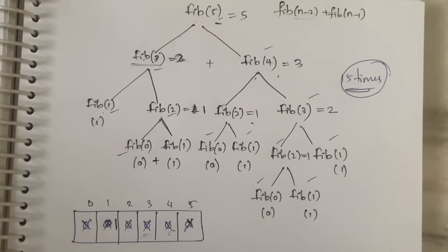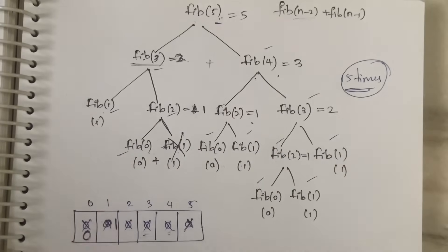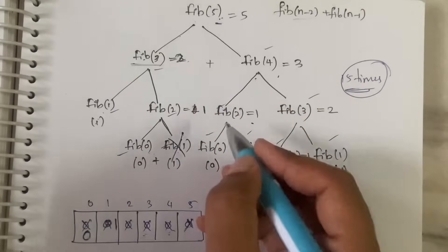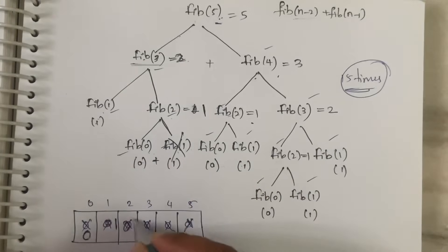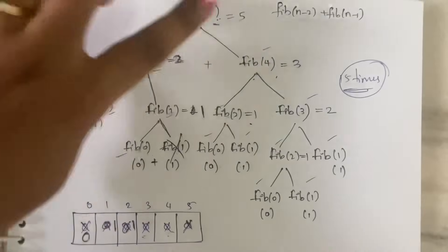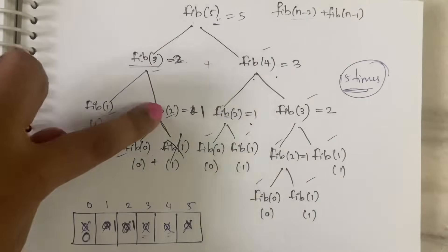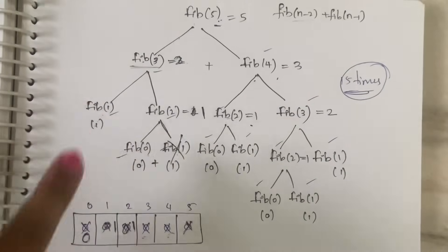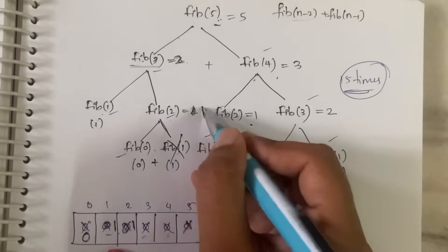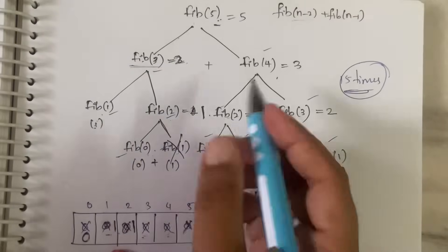fib(2) is still unknown, so we break it into fib(0) + fib(1). fib(0) = 0 — update array index 0 = 0. fib(1) is already known from the array, so we need not call it again. Now fib(0) + fib(1) = 0 + 1 = 1, so update array index 2 = 1. fib(1) + fib(2) = 1 + 1 = 2, so update array index 3 = 2.